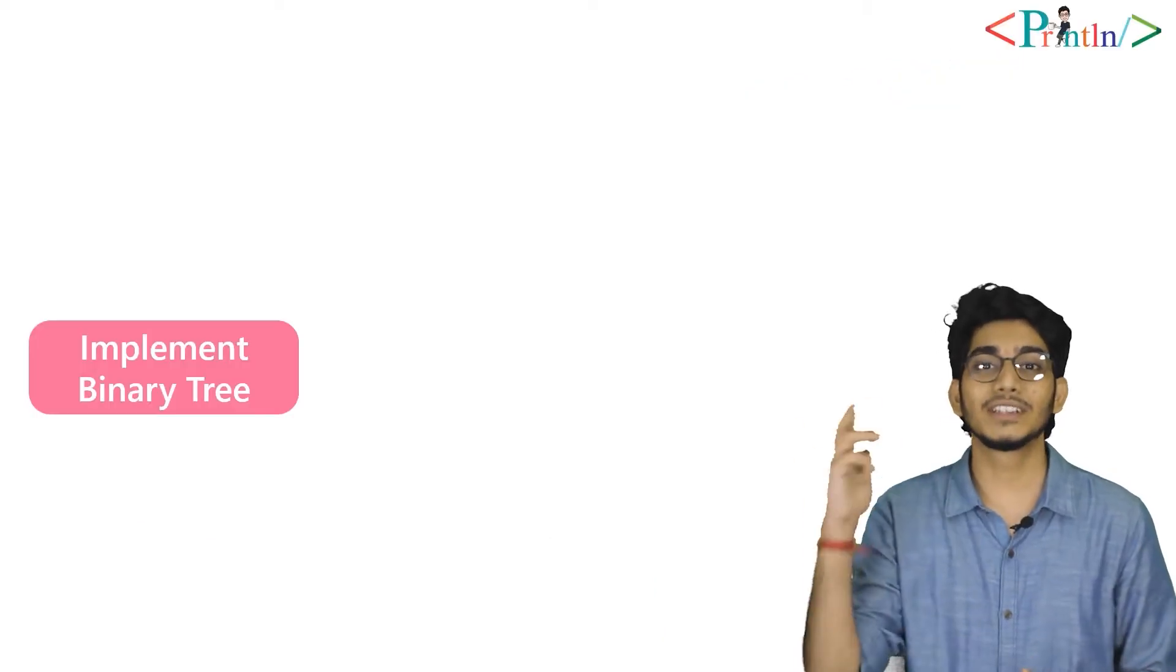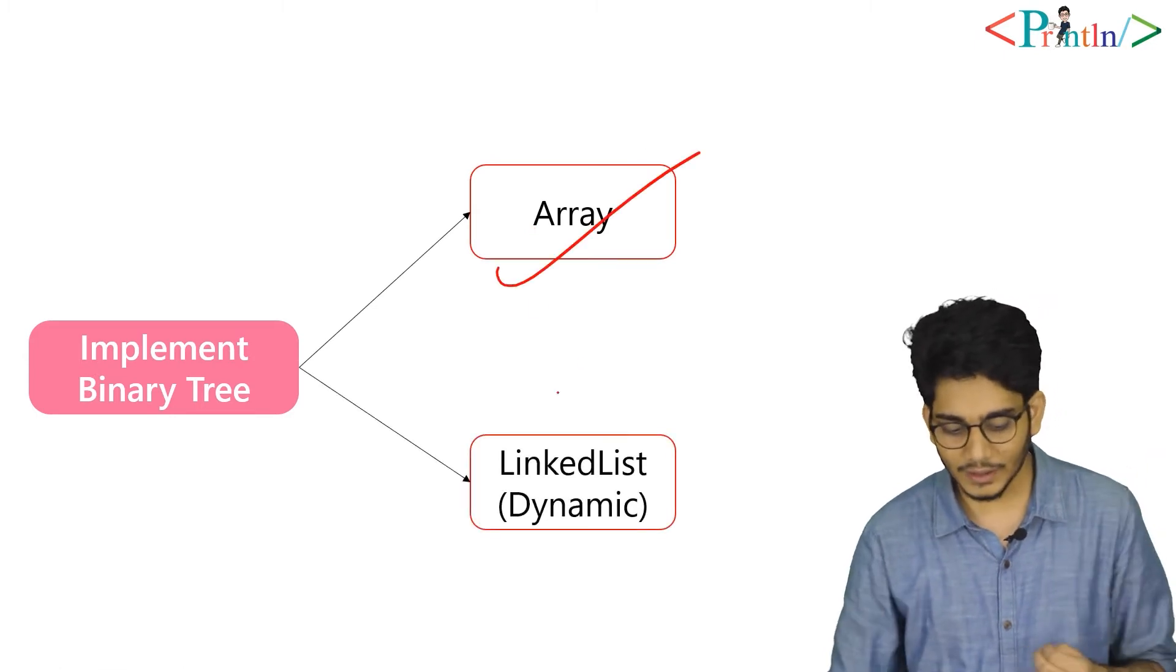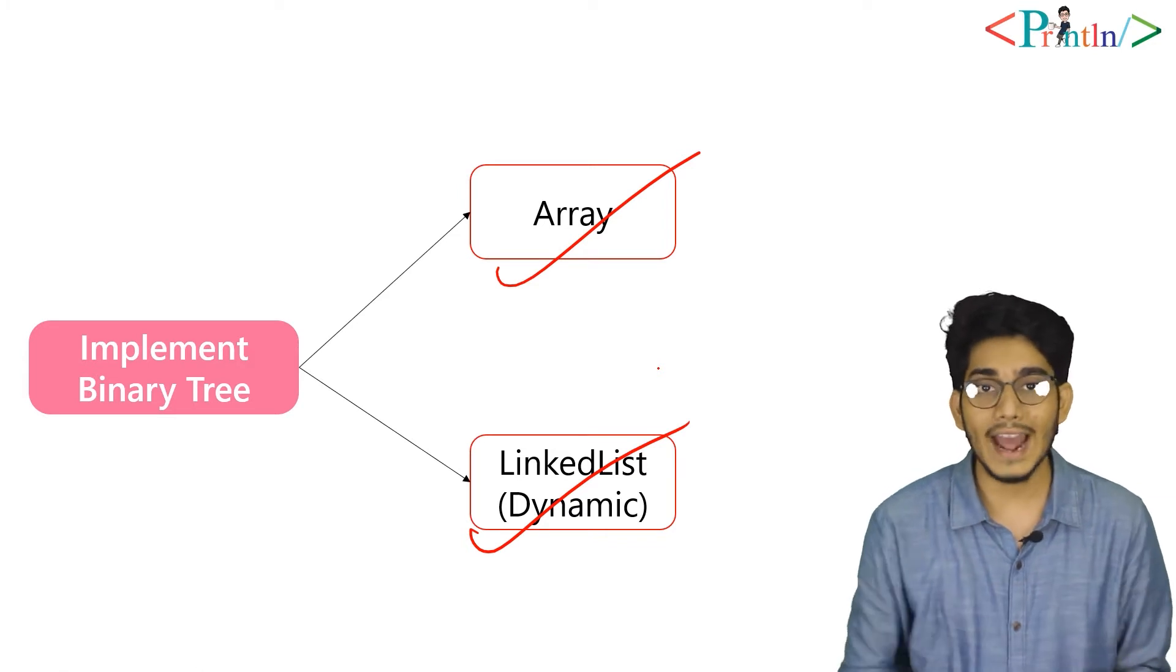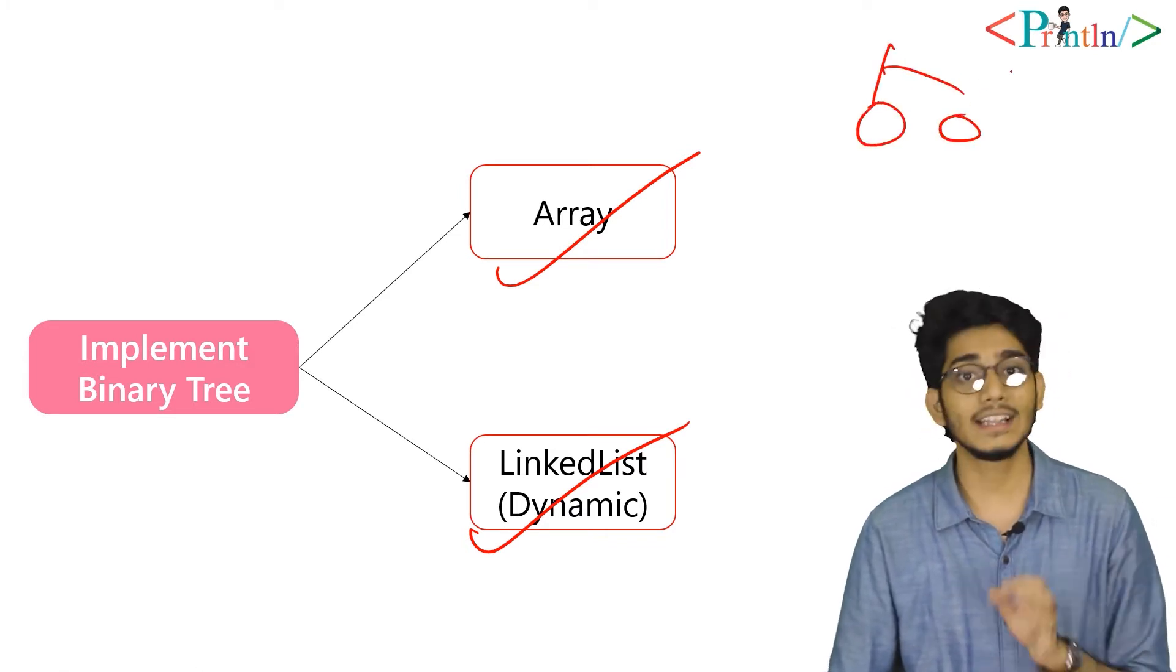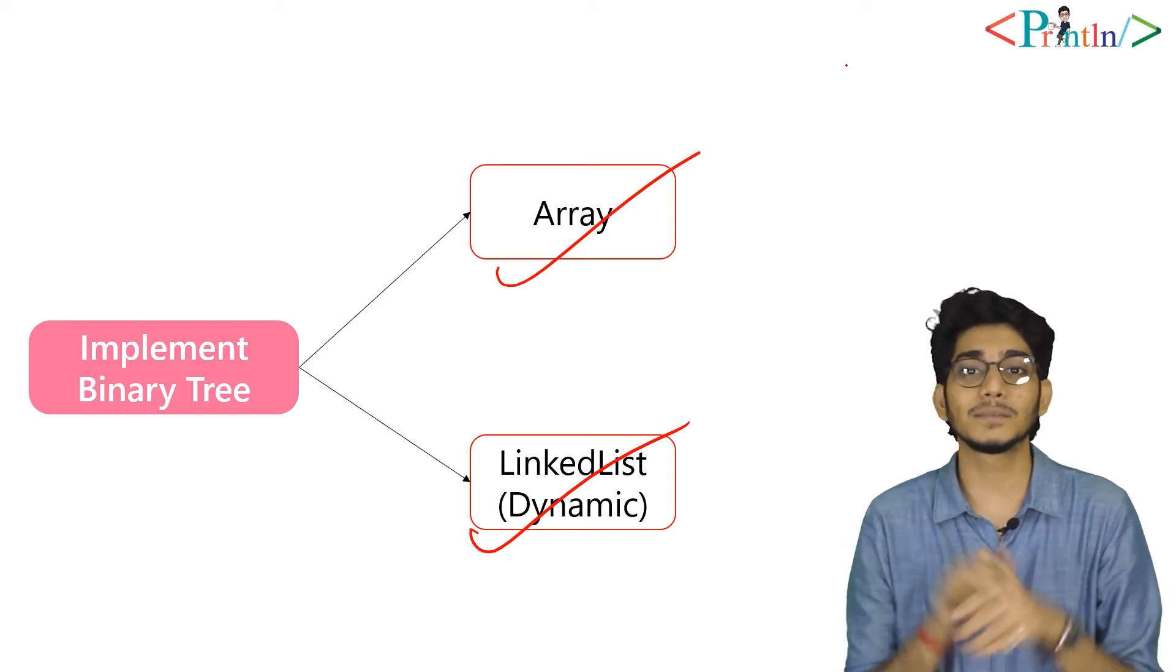We can implement a binary tree using two methods: the first one is using an array and the second one is using a linked list. There is a benefit of using a linked list over an array because in a linked list we can allocate nodes at runtime. In this series we'll mostly implement things using linked lists, but in this video...